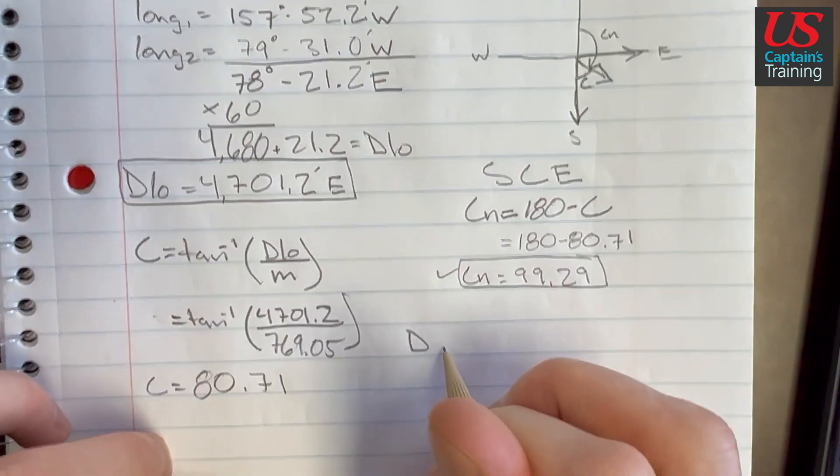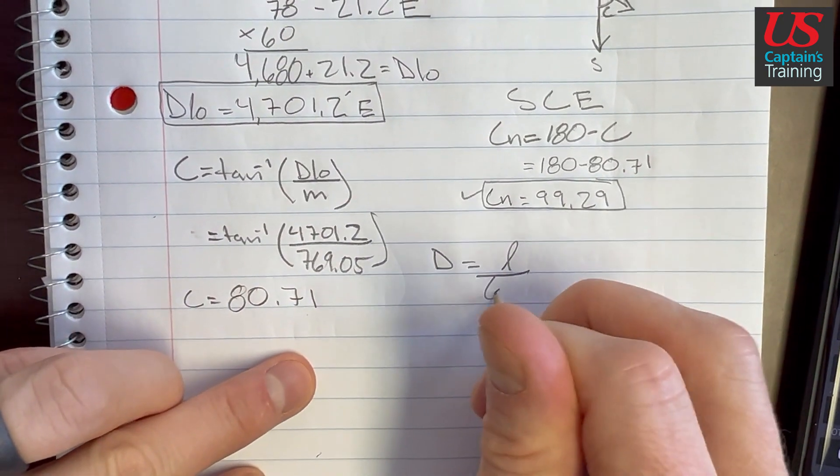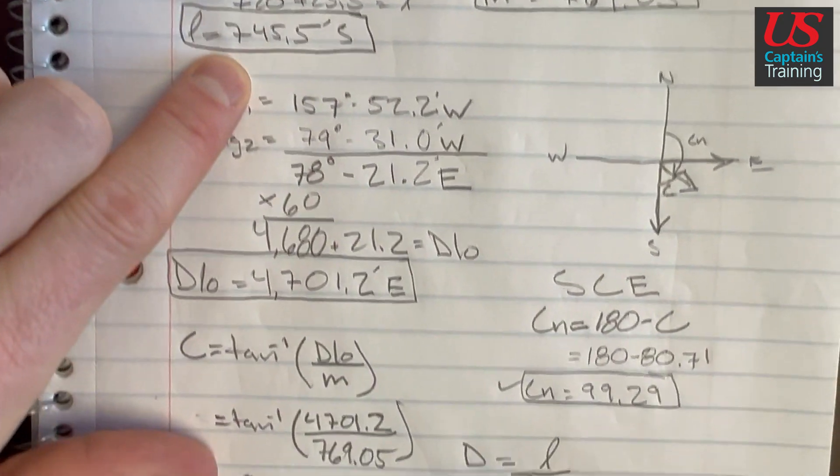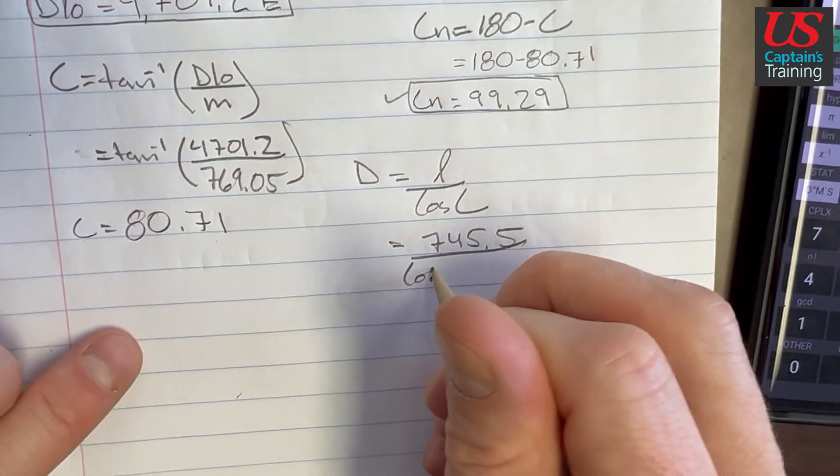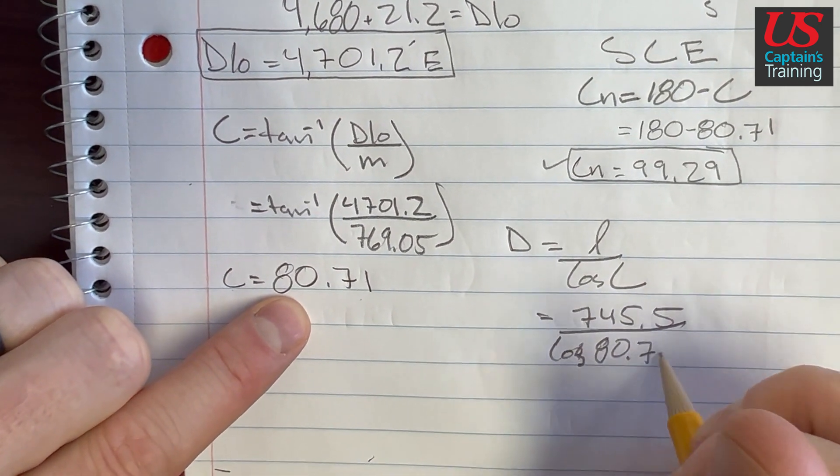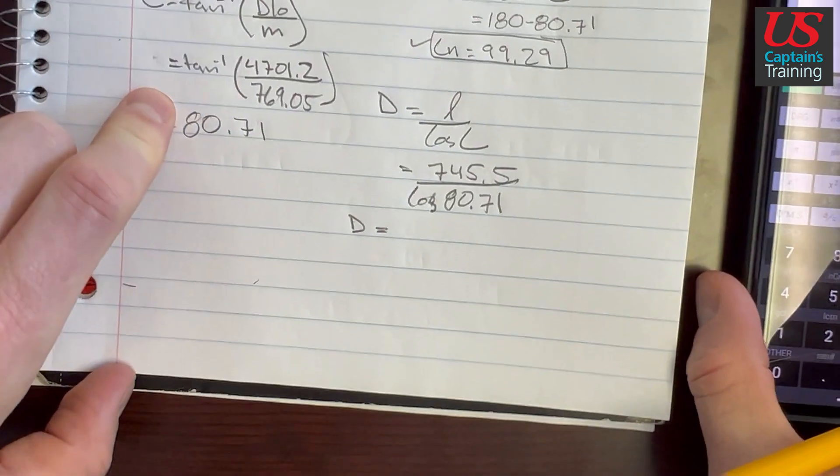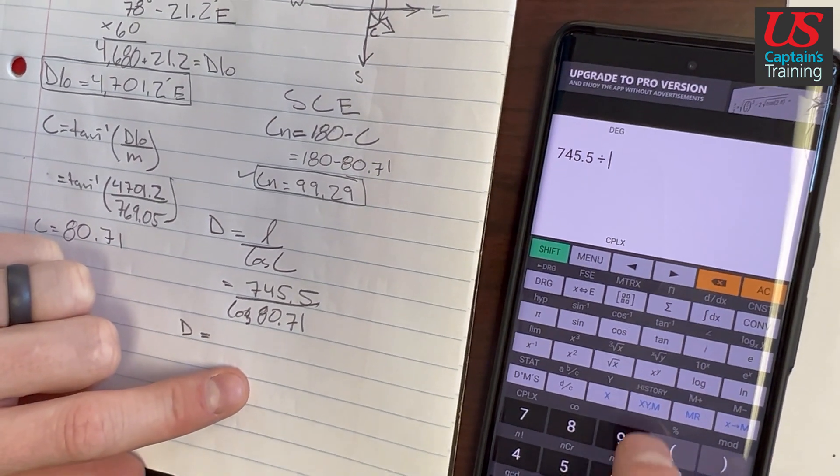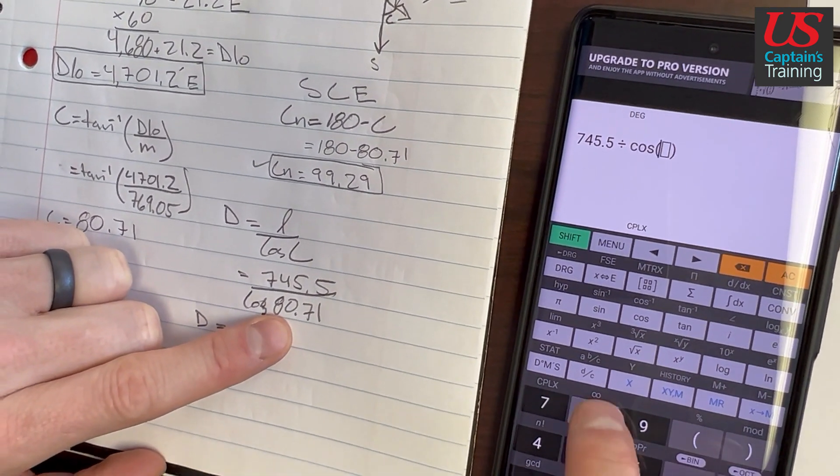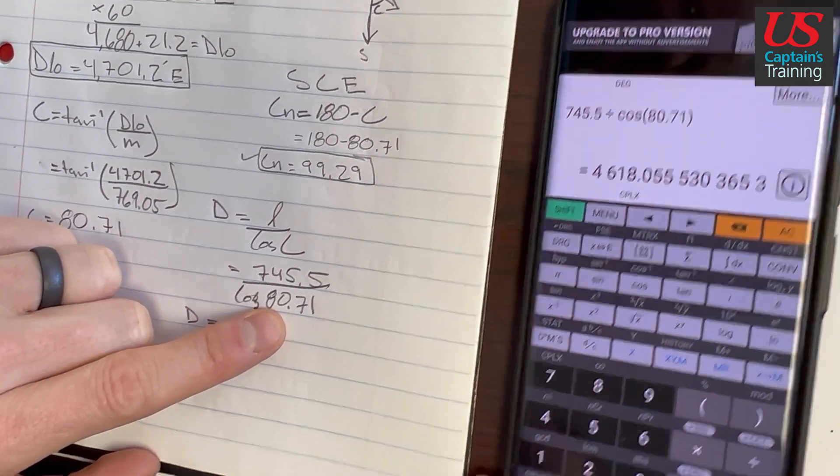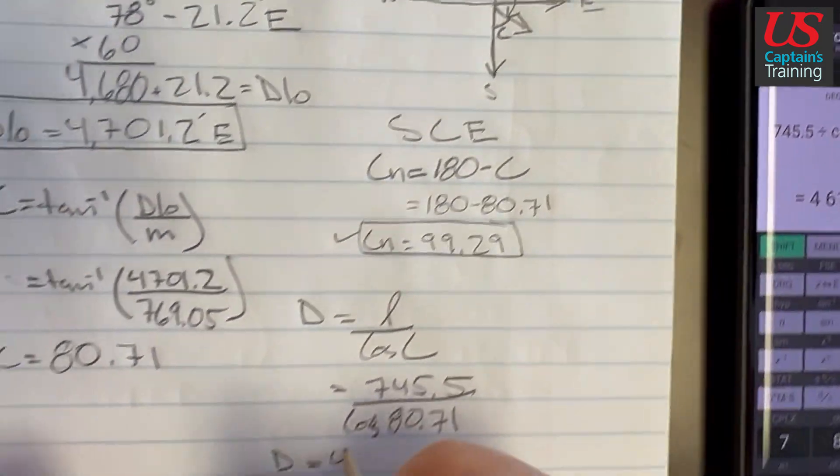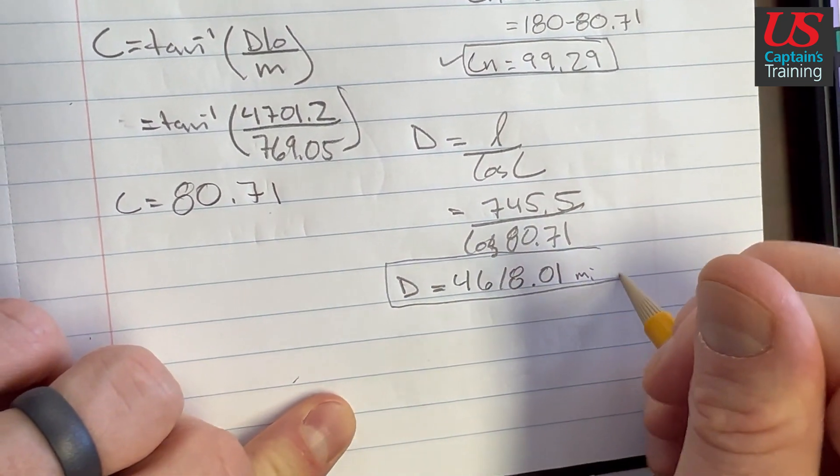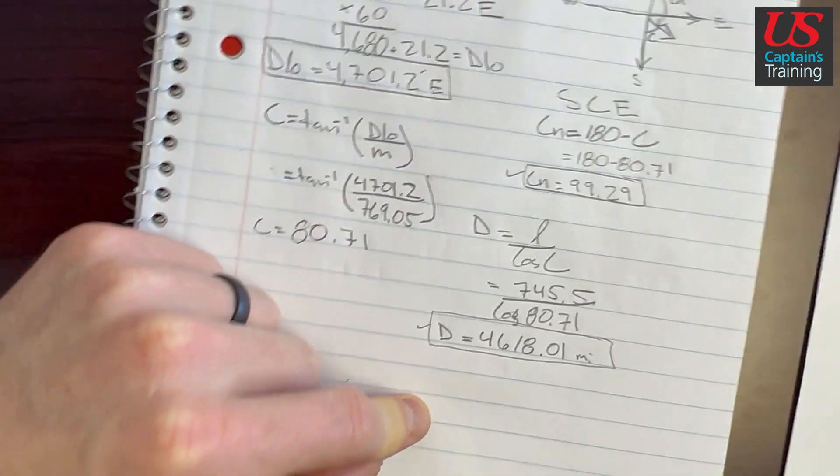Now let's find distance. Distance is equal to little L over cosine of C. Our little L is up here, 745.5, and cosine of 80.71. So our distance is equal to, punch this up, 745.5 divided by cosine of 80.71 equals 4618.01. And it's miles, and this is one of our answers.